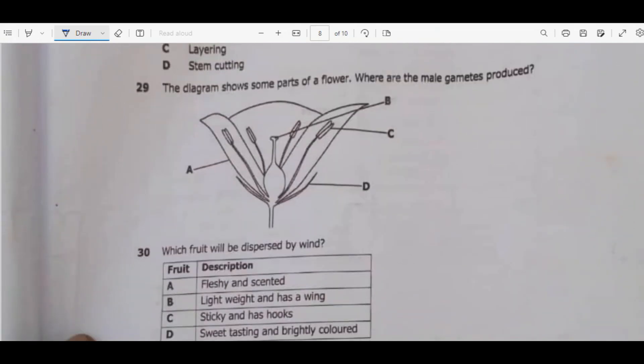Question 29. The diagram shows some parts of a flower. Where are the male gametes produced? So the male gametes are pollen grains. The question is asking us to determine the part where the pollen grains are produced. So the answer is C because C is the anthers.